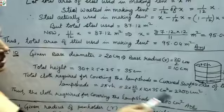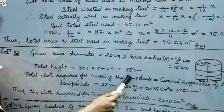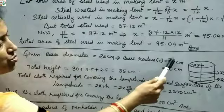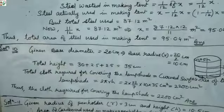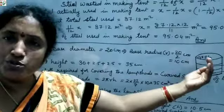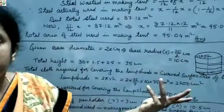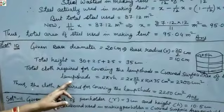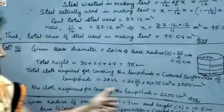Height of the cloth H = 35 cm. Base diameter = 20 cm, so base radius R = 20 ÷ 2 = 10 cm. The lamp shade is like an open cylinder — top is open, bottom is open, bulb fits in between — so we only need the curved surface area.